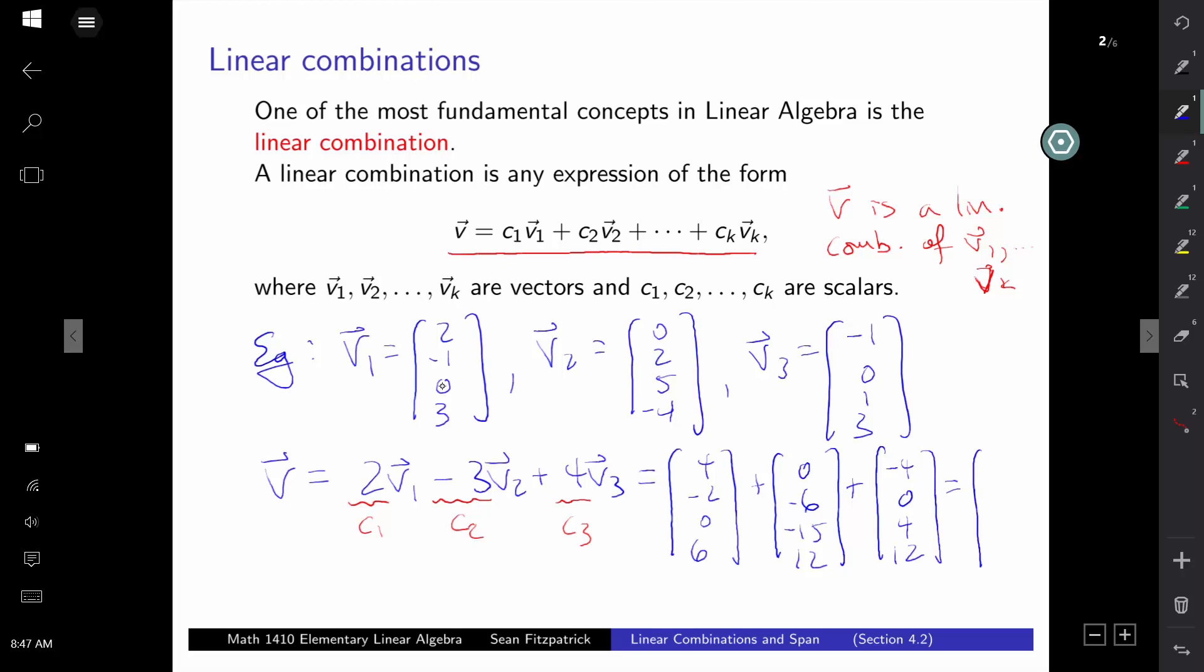And I can add those together, I would get (0, -8, -11, 30). So this is my vector V. And what I've done is I've shown that this vector V, the vector (0, -8, -11, 30), can be written in terms of the vectors V1, V2, V3.